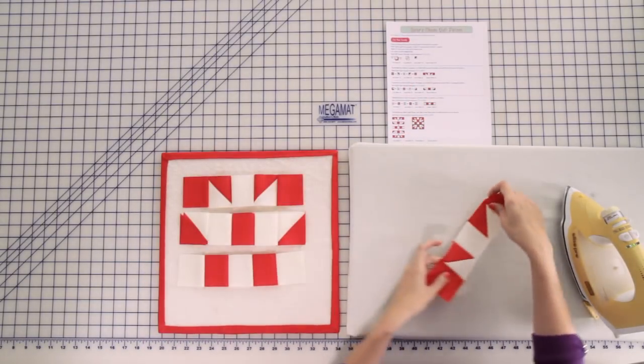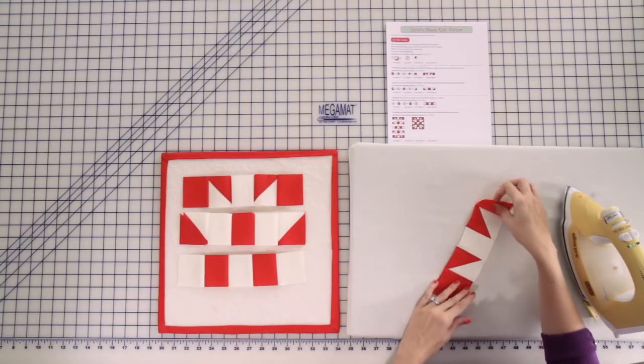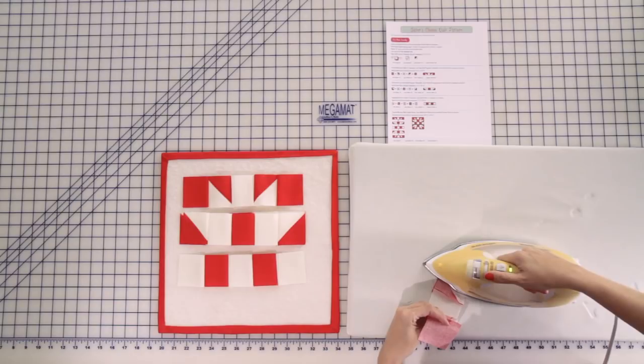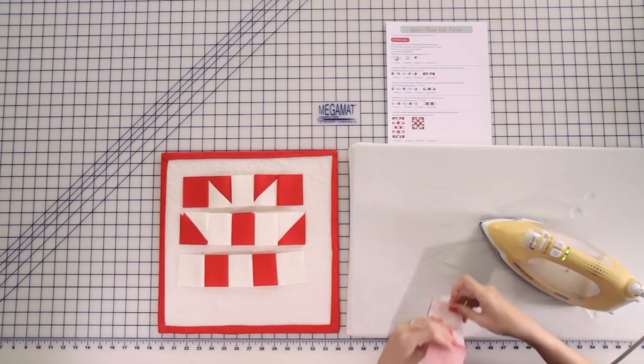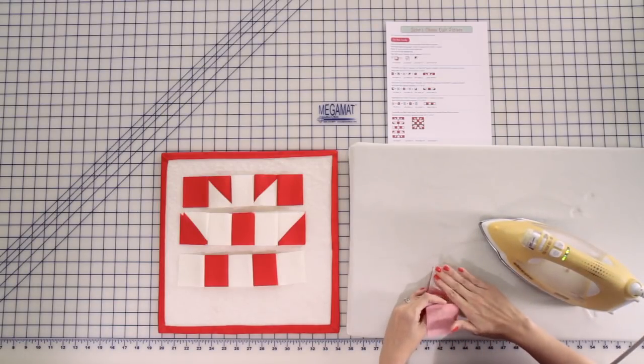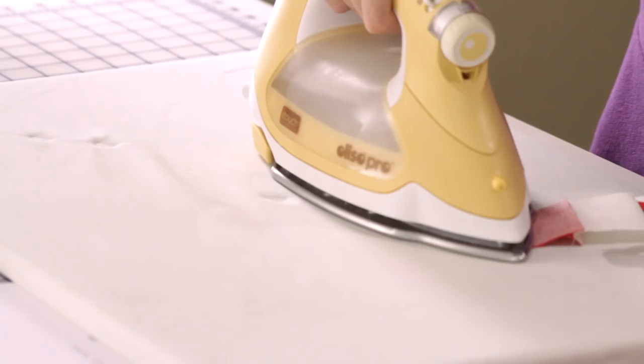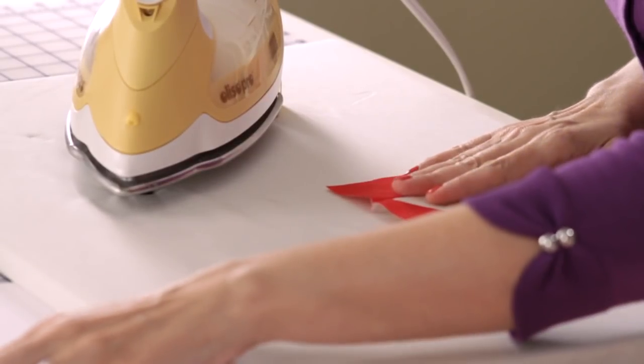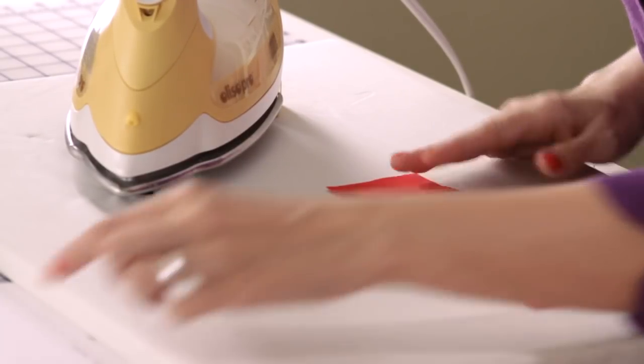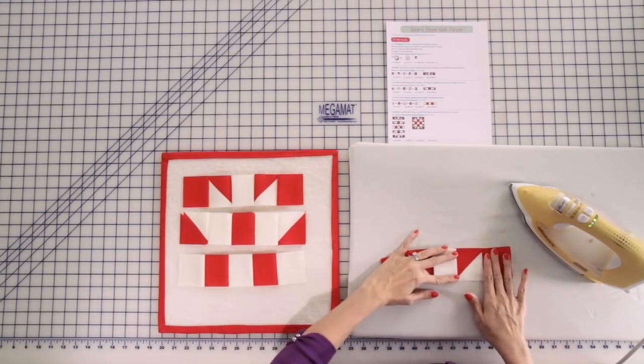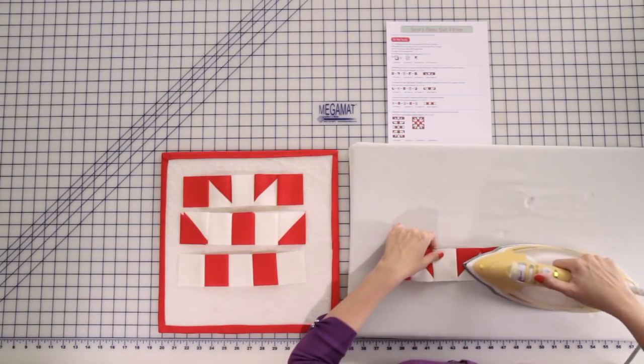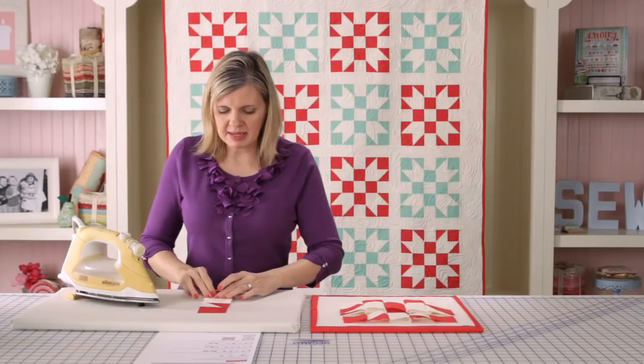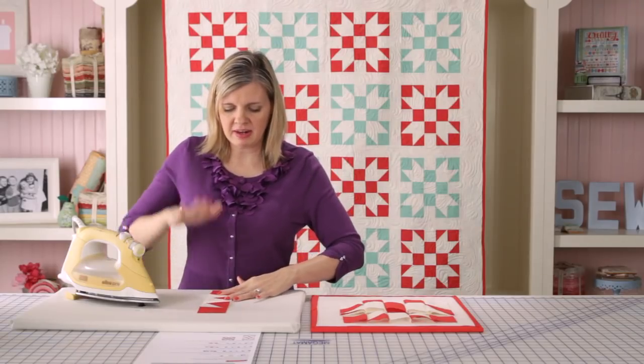So the first step is to set your seams. Setting your seams really just means pressing it flat, and that will help later when we press open. So you just press each individual seam flat. So from here, your seams are set, and we're going to follow the arrows in our pattern. It's very important that you follow the arrows, and I am just finger pressing my seams the way that they need to go and then pressing down.